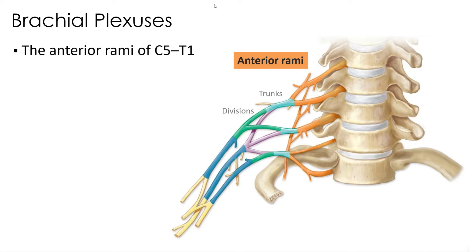Each brachial plexus is formed from the anterior rami of spinal nerves C5 through T1, and these components travel superior to the first rib and continue to the axilla or the armpit. The brachial plexus is more complex than the lumbar and sacral plexuses because of the multiple branching and merging patterns that ultimately arise from the anterior rami.